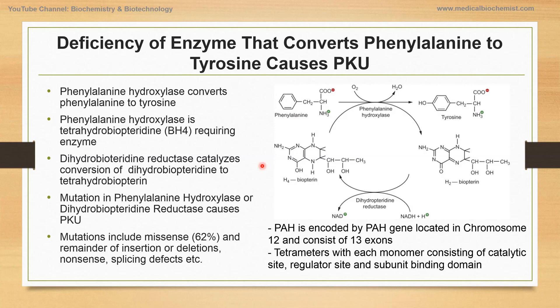The PAH gene, encoding phenylalanine hydroxylase, is located on chromosome 12q and consists of 13 exons. Phenylalanine hydroxylase is generally tetrameric, with each monomer consisting of a catalytic site, a regulatory site, and a subunit binding domain.